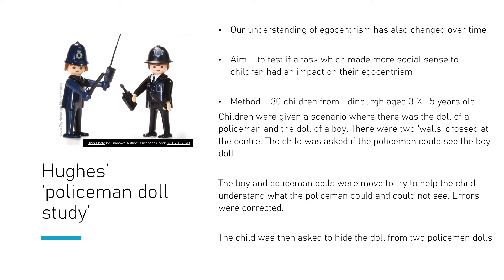In Hughes's policeman doll study, egocentrism was again being tested, but instead of mountains and a doll, they used two walls arranged in a cross shape, creating four sections, along with a policeman doll and a boy doll. The aim was to see if a task that made more social sense to children had more of an impact. A snow-covered mountain with a house and a cross is quite abstract, so Hughes wondered whether some of Piaget's results were due to the unfamiliar methodology. Using policemen and walls — a boy hiding from a policeman — is more familiar to children from play and everyday experience.